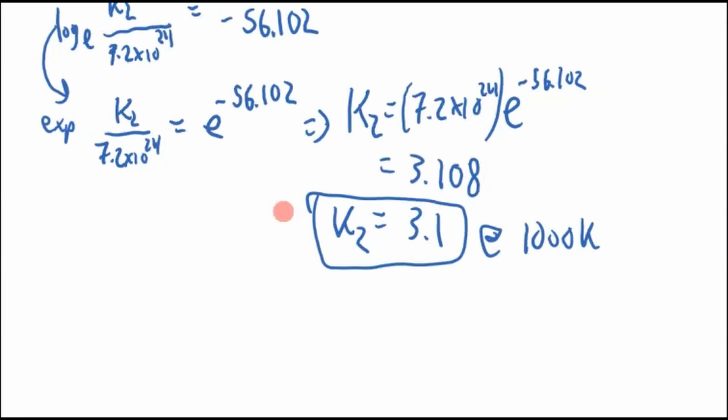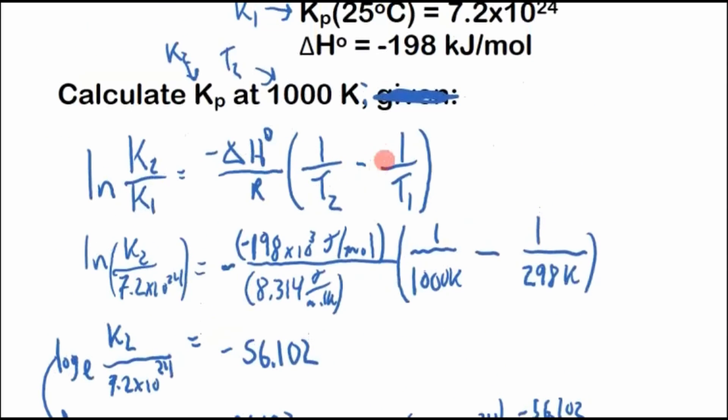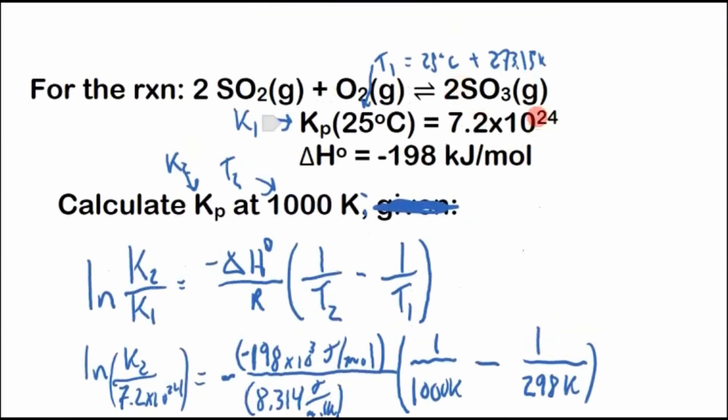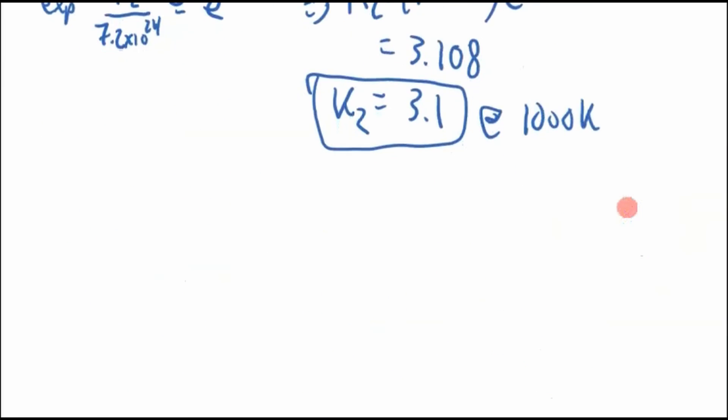Very briefly, before we go into the next exam problem, let's have a look at what happened. So this is a very large number, right? Very large number. That means products are favored. That's because the equilibrium constant is a ratio of the products over the reactants. If we have a very large number, then we have a lot of products compared to reactants.